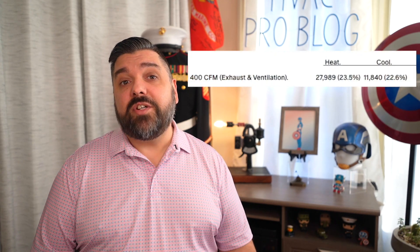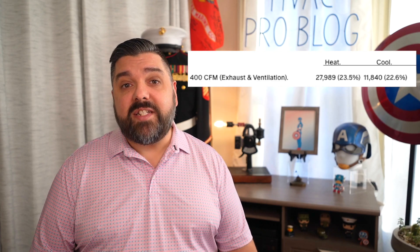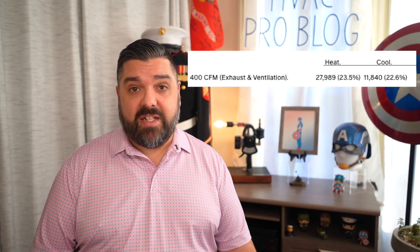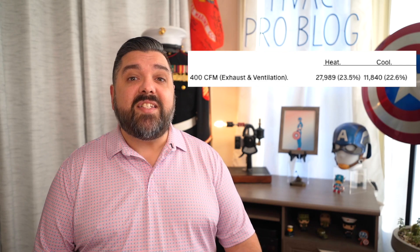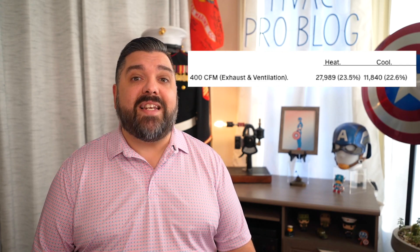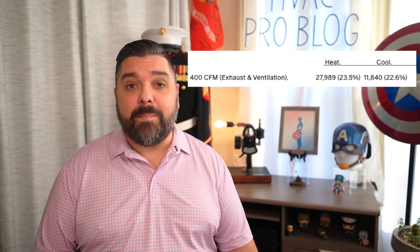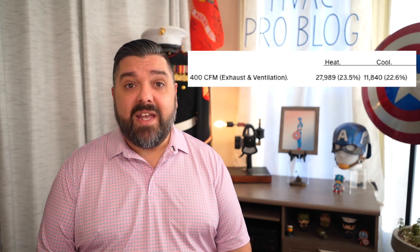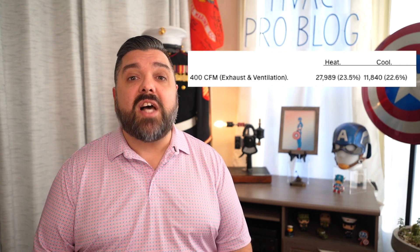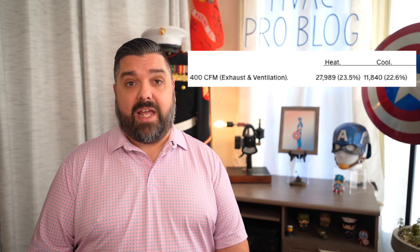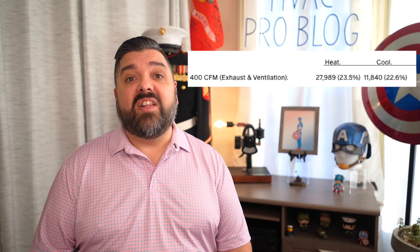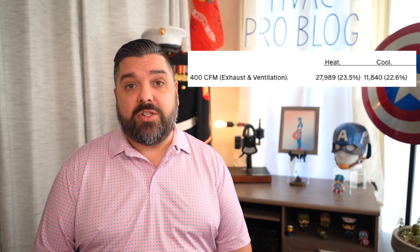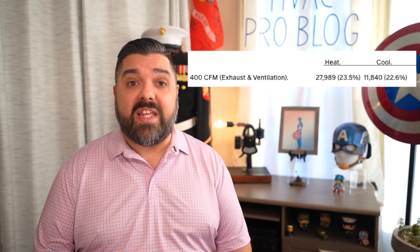The original calculation did not even have any ventilation, accounting for zero in both heat and cool calculations. If you take a look at the chart, with 400 CFM of exhaust ventilation, it was 27,989 BTUs, or 23.5% of the total heat loss. It accounted for almost one ton of additional cooling gain of 11,840 BTUs and almost 23% of the heat gain.